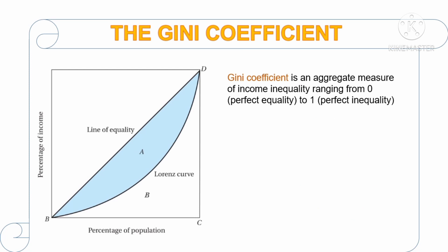Another way to measure inequality is using the Gini coefficient. It is an aggregate measure of income inequality ranging from zero, which means there is perfect equality, to one, which means there is perfect inequality. The Gini coefficient presents the mathematical background of the income inequality story presented in the Lorenz curve. It is measured by dividing the area between the diagonal and the Lorenz curve — area A — by the total area of the whole triangle, or area A plus B. In formula, the Gini coefficient equals area A over the sum of area A and B.